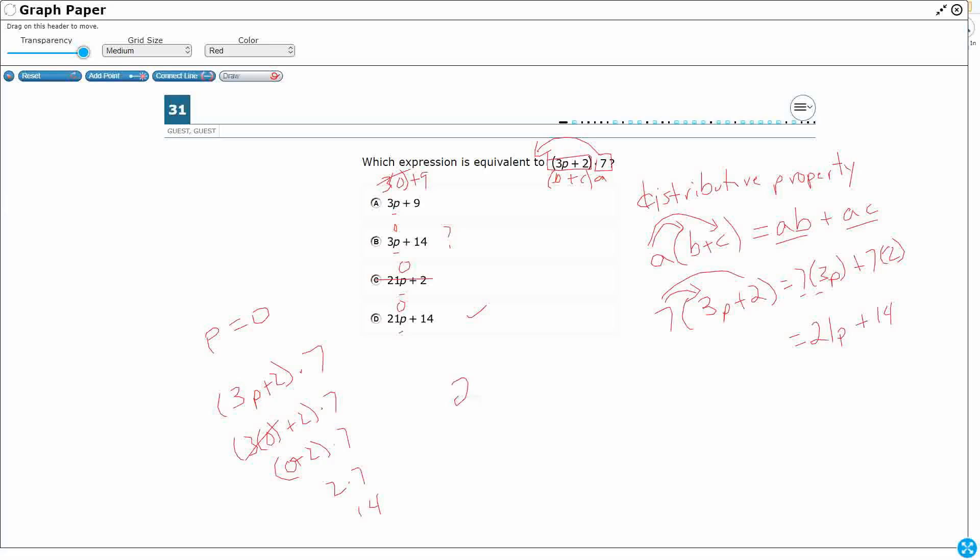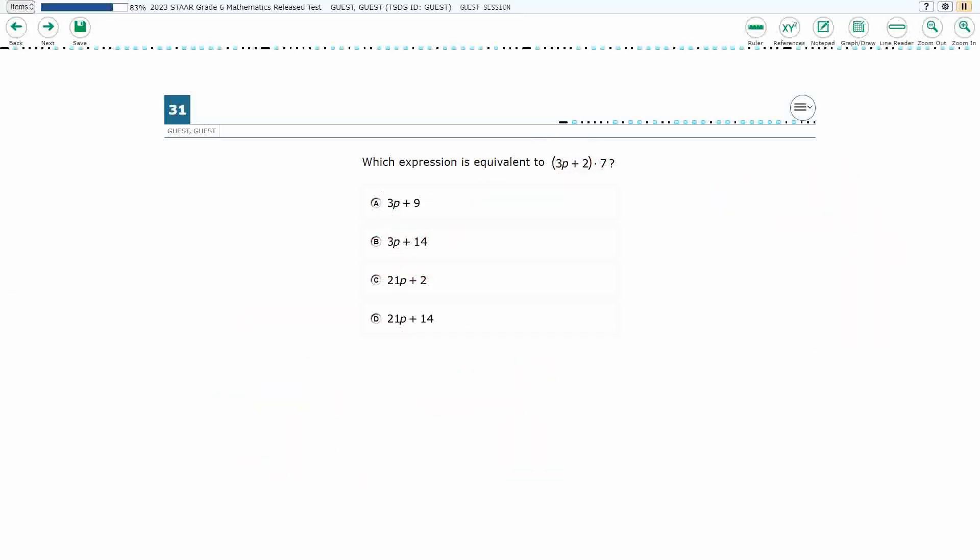So let's put in 2. So 3 times 2 plus 2 times 7, that's going to be 6 plus 2 times 7. That's going to be 8 times 7, and that is going to be 98. And if we put a 2 here, that is going to be 6 times 14, not 7 times 14. So B doesn't work. So my answer is D.